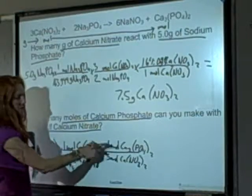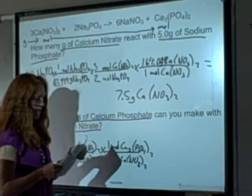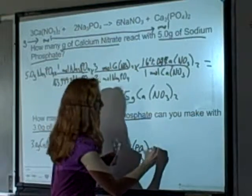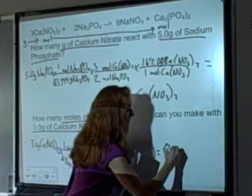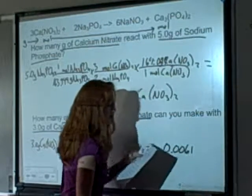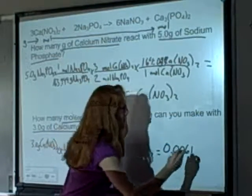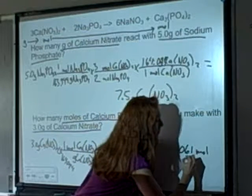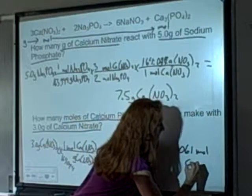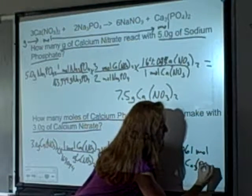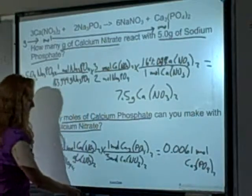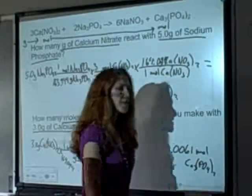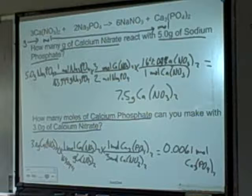Just divide by 3 again, and from that I got 0.0061 moles of calcium phosphate — moles of Ca3(PO4)2. So that's the grams-to-moles stoichiometry, or grams-to-grams.